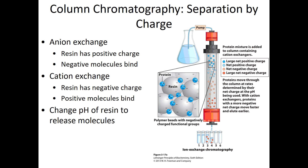At extremely low pH there are protons on the carboxylic acids and the amine group. If we raise the pH a little, we lose the proton from the carboxylic acid — it becomes neutral and no longer as positively charged, so it elutes. The advantage of ion-exchange chromatography is it's specific based on charge and you can manipulate the charge fairly easily by changing the pH. The disadvantage is that changing the pH may cause the protein to lose its fold.